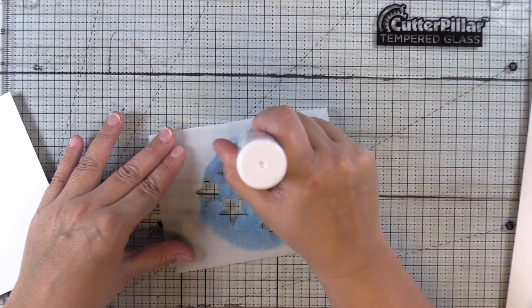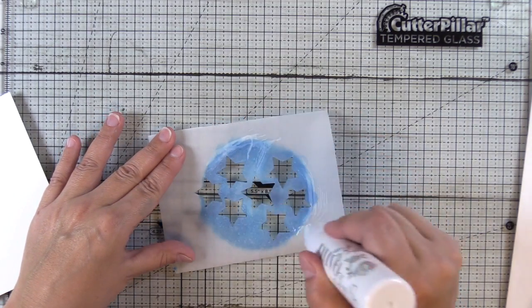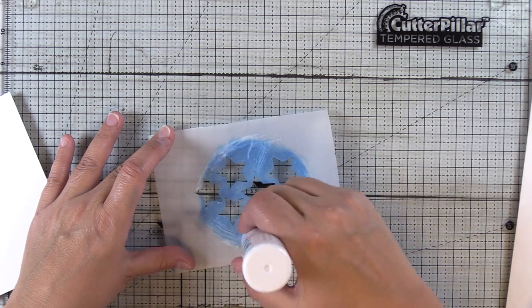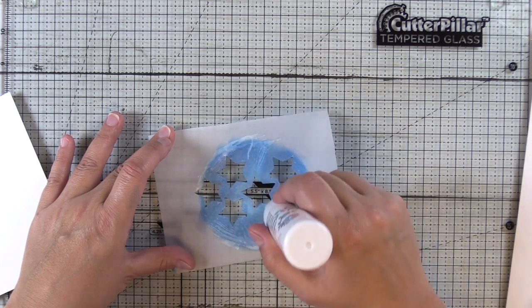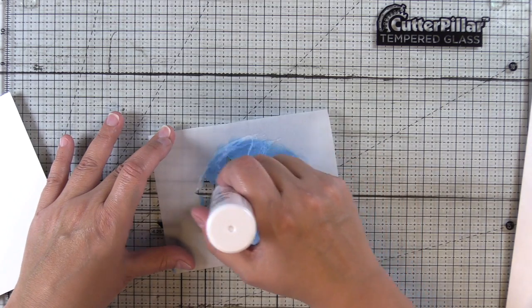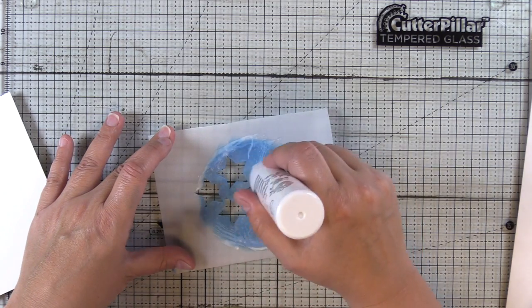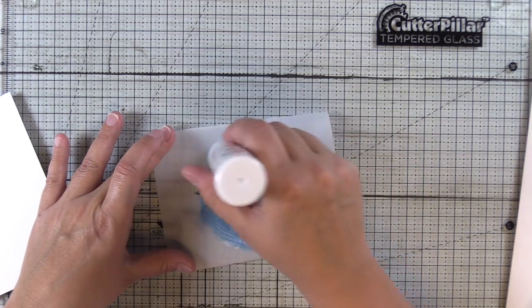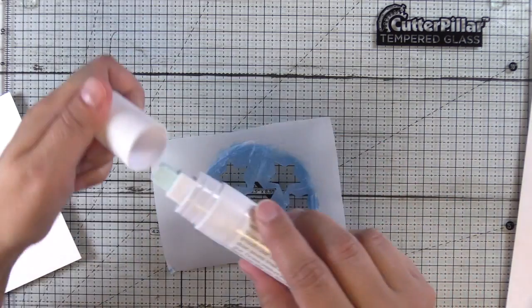Our third technique: we're going to put glue on the backside of our homemade stencil. This is a large glue pen which I find works really well for vellum, but if you have a favorite vellum adhesive definitely go ahead and use that. You want to make sure that you get glue all around the edges of the stars and around the perimeter of it.